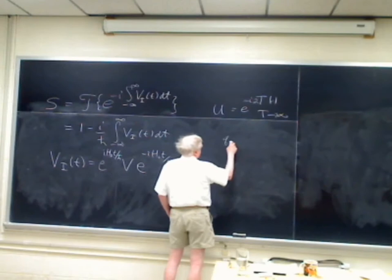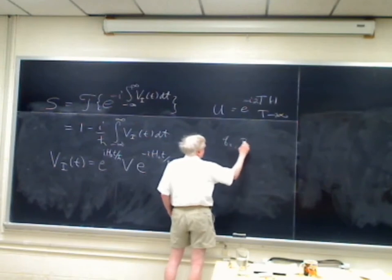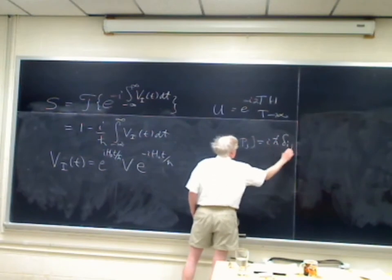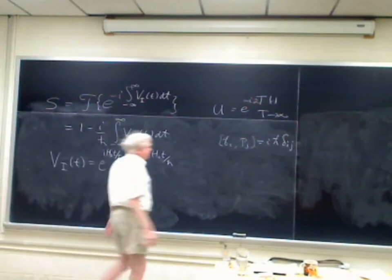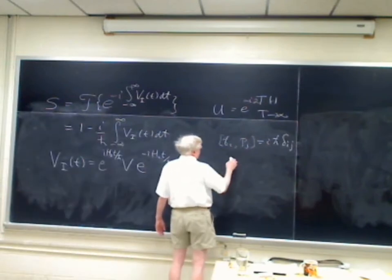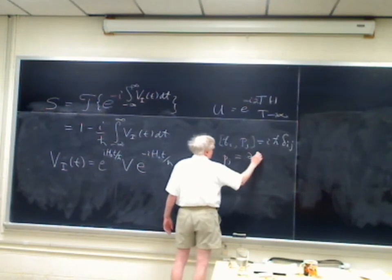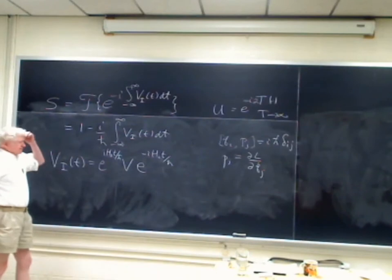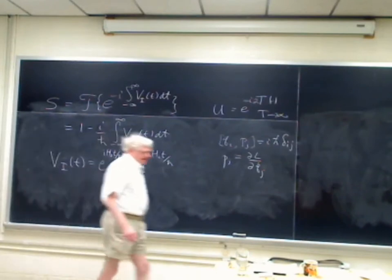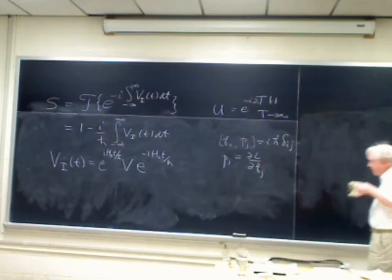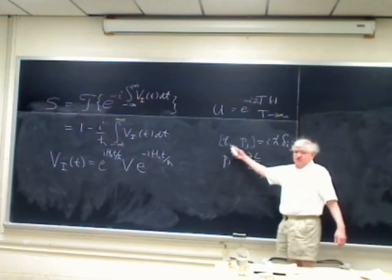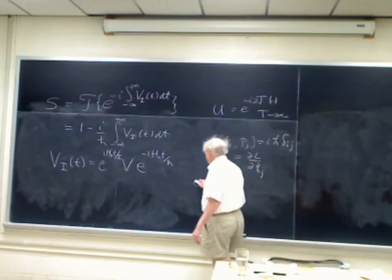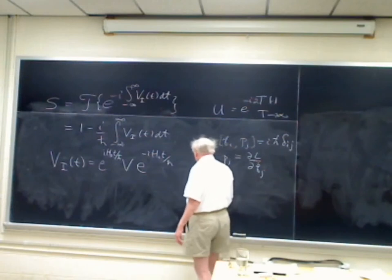Basically you have a quantum system with many coordinates Q_i. You find your conjugate momenta P_i, and you impose the commutation relation: [Q_i, P_j] = i ħ δ_{ij}. This comes from the Lagrangian, where P_j is the partial derivative of the Lagrangian with respect to Q̇_j.